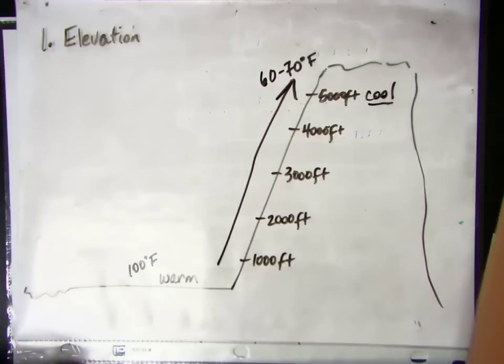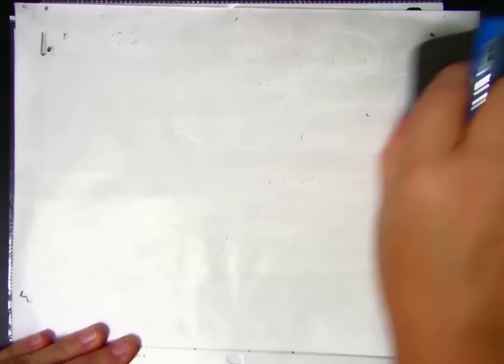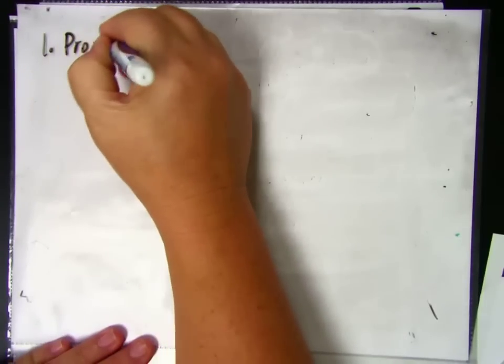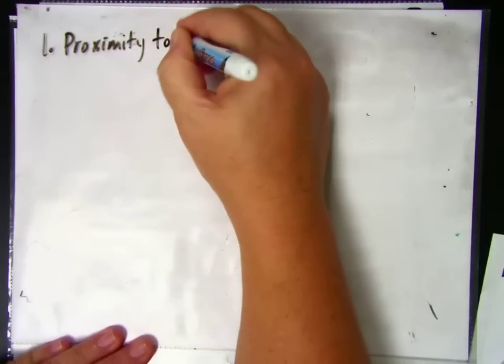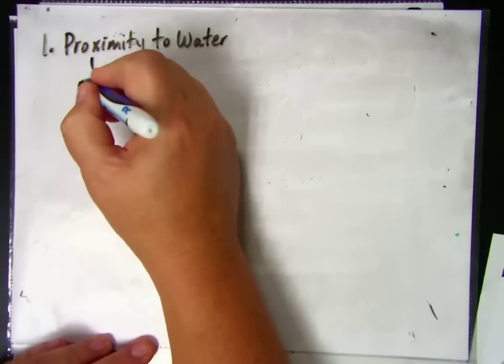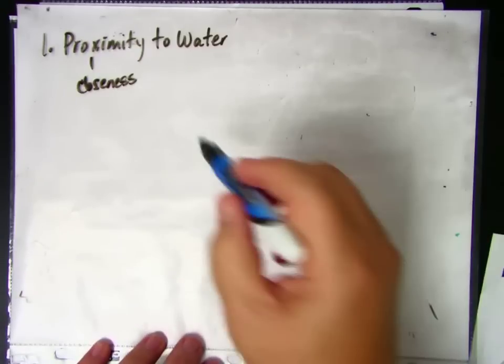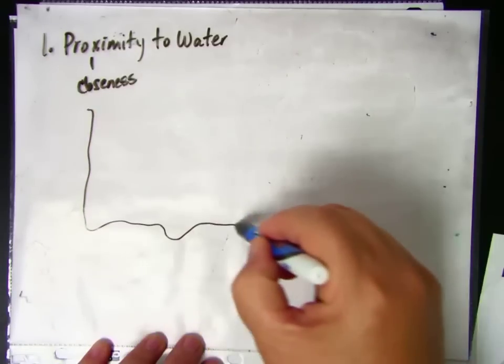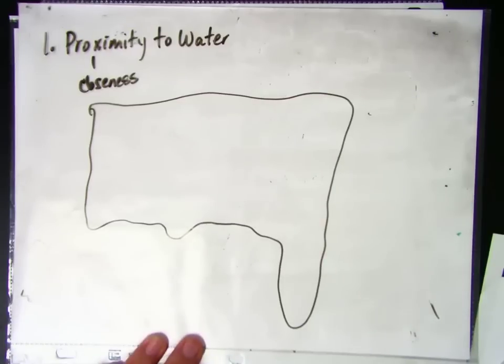And the last factor that we're going to talk about that affects climate is your proximity to water. And proximity to water means how close you are to a large body of water. So proximity is closeness. And if you are, let's say, in the U.S., just draw a very cartoon version of the United States.